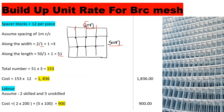So we have 51 spacers along the length and 3 along the width. The total number of spacer blocks is 51 multiplied by 3, which gives us 153. At 12 shillings each, the total cost of spacer blocks is 1,836 shillings.